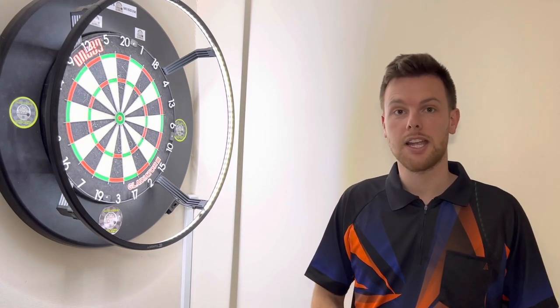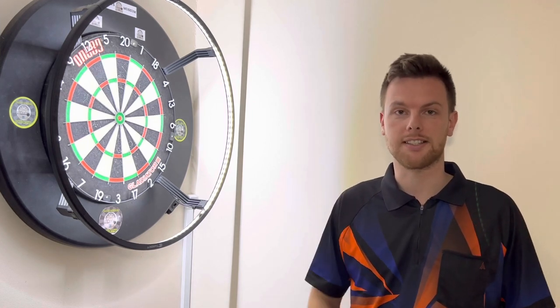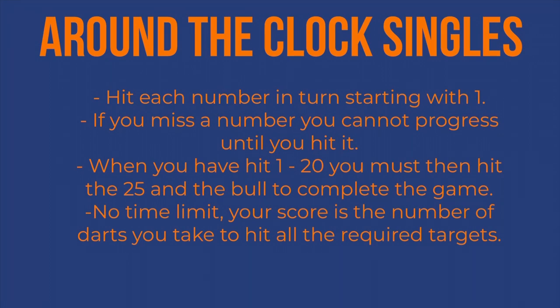I'm going to have a game of singles round the clock now and just so you can see my score I will post it up on here as well. So the rules for this game are very simple. You aim at each number in turn and you can't move on until you've hit that number, finishing with the 25 and the bull. Your score is the amount of darts it takes you to complete it from one to 20 and the 25 and bull. Here's my attempt.